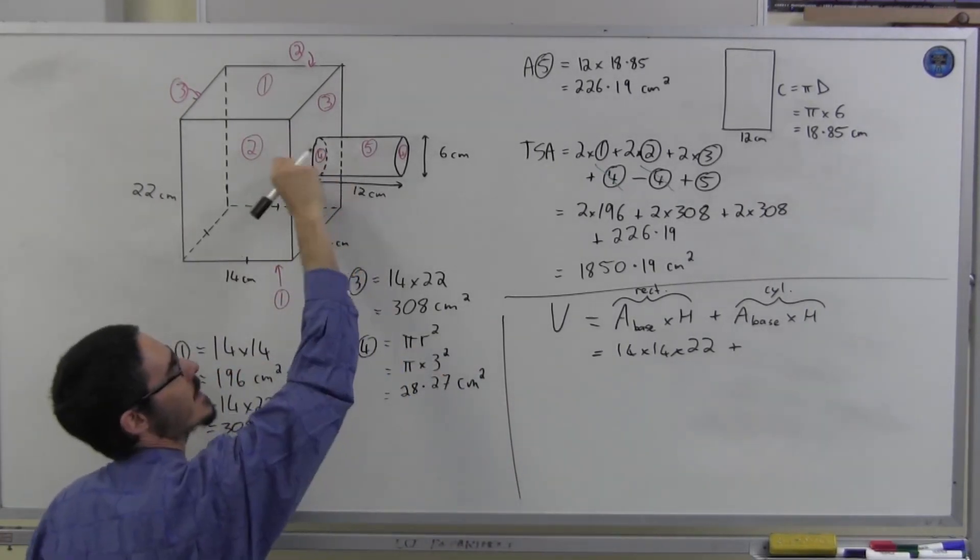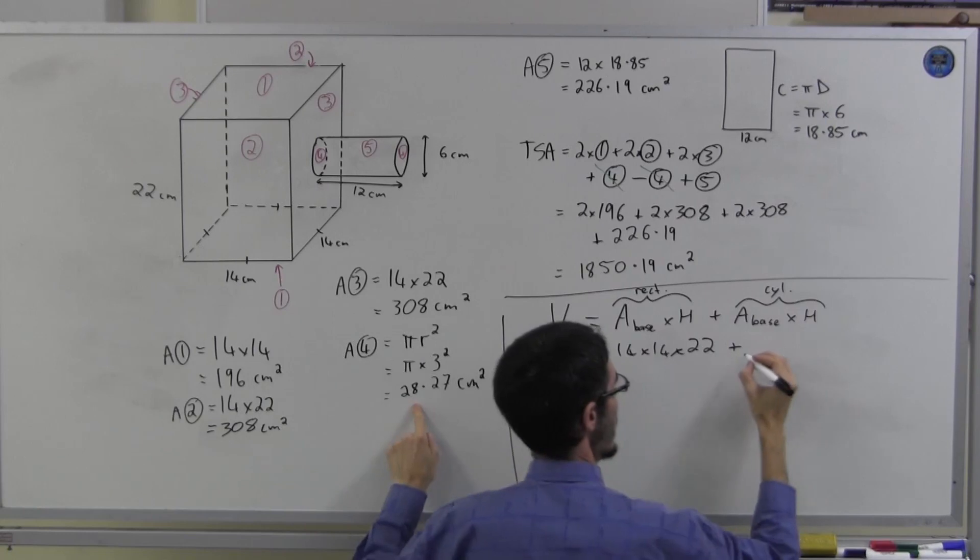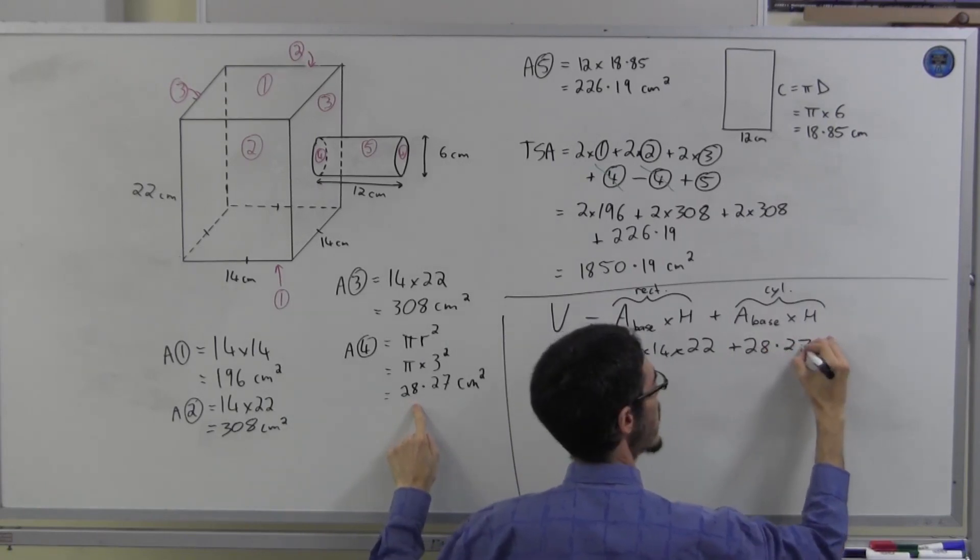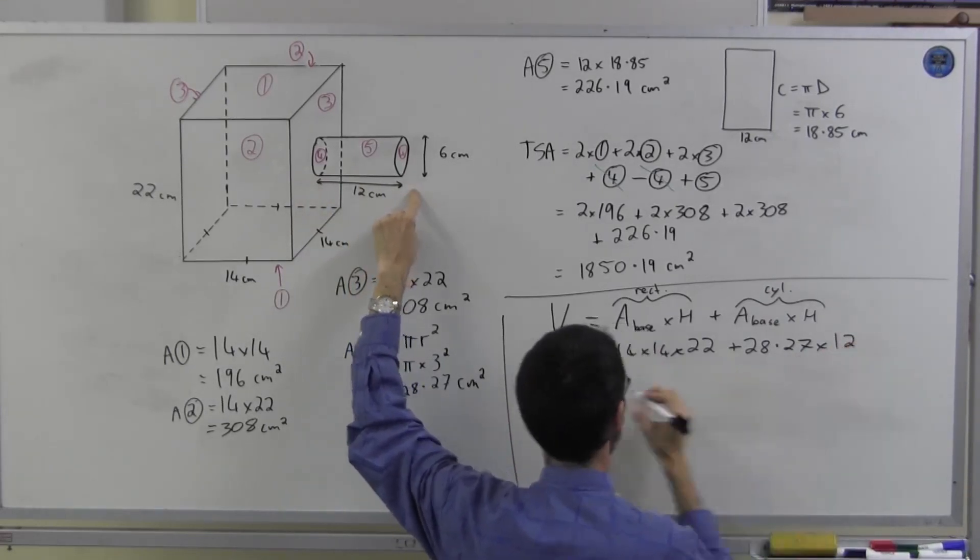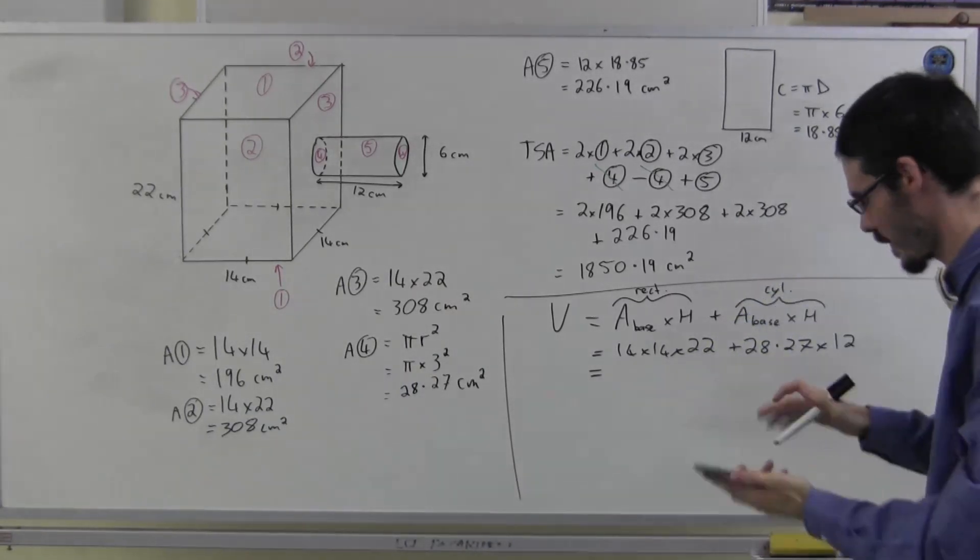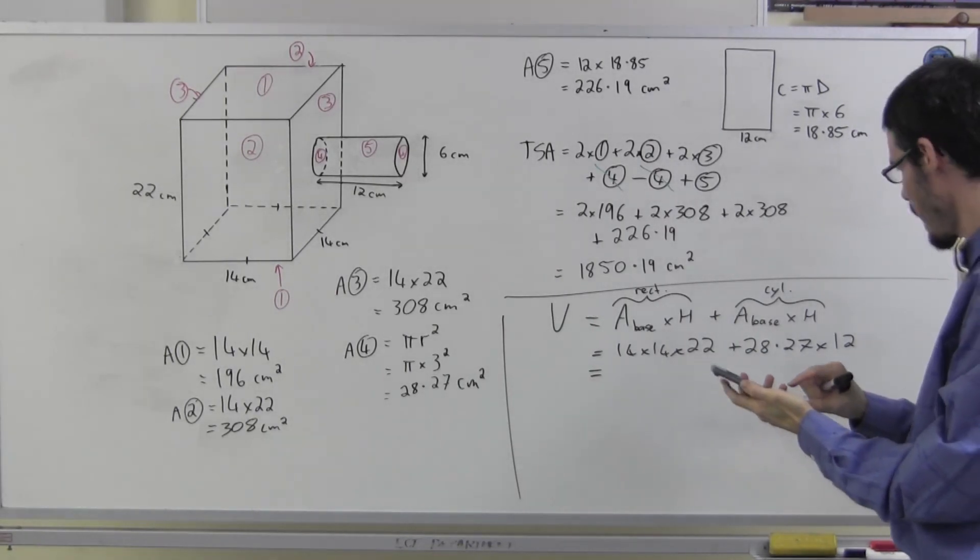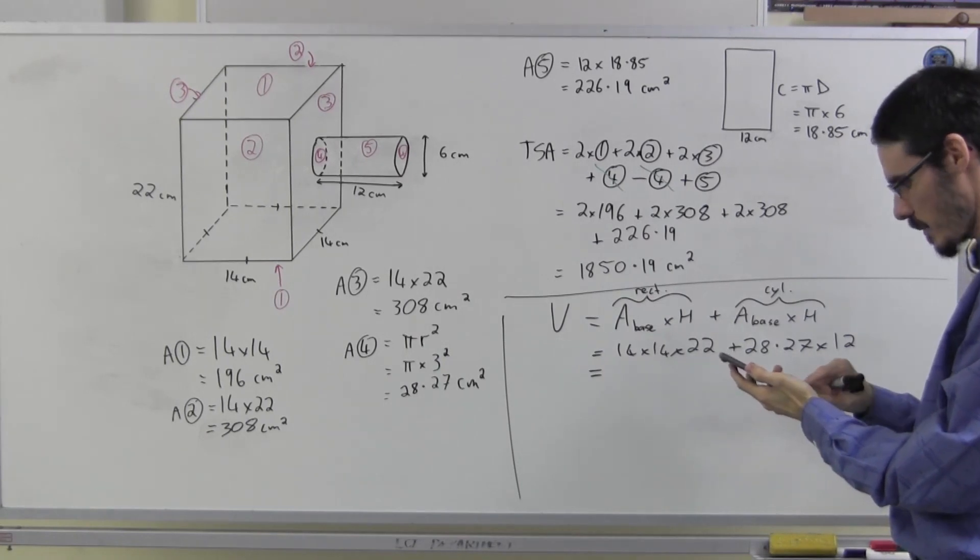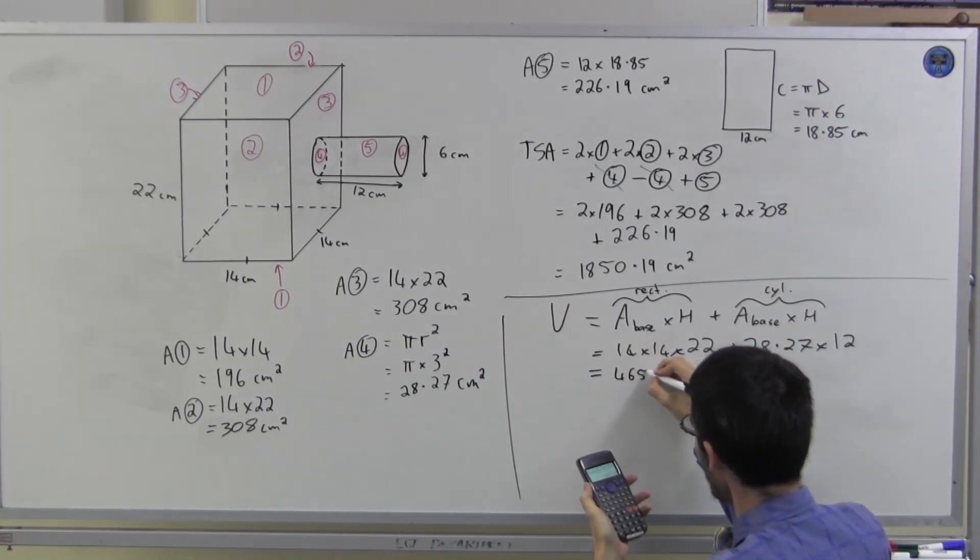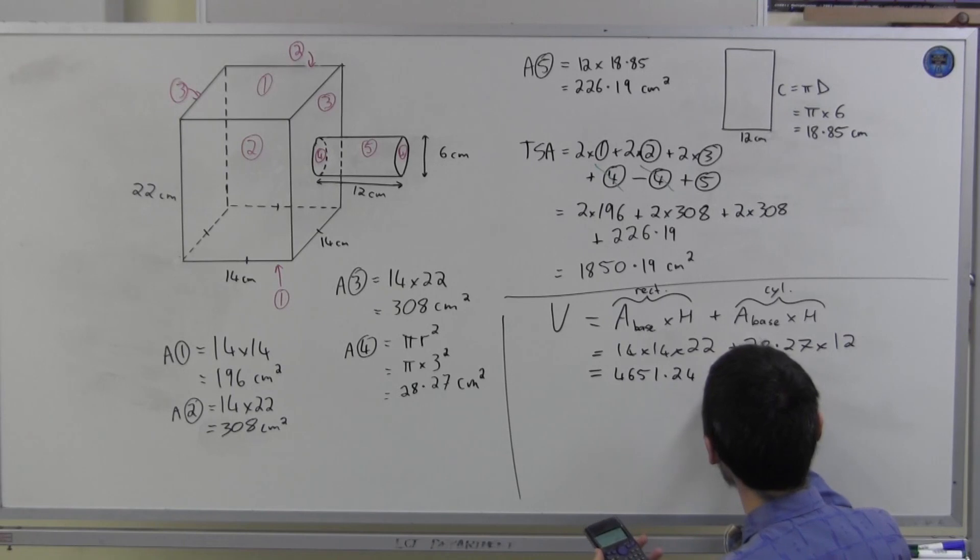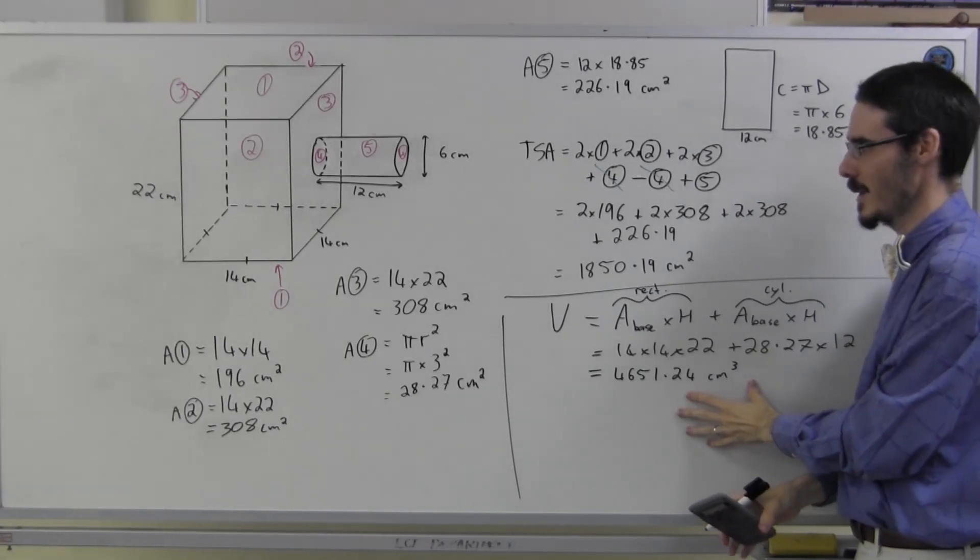Okay. 14 by 14 multiplied by 22 plus the area of this, well actually this is my cylinder right, so the base is actually the circle that's number 4, 28.27, and the height is the height of the cylinder which is the 12. And it's time for my calculator again. 14 times 14 times 12, no 22, plus 28.27 times 12, which is 4651.24 cubic centimeters.